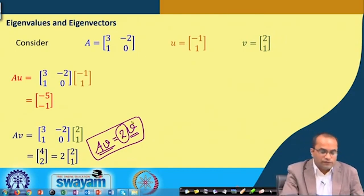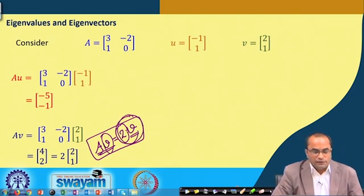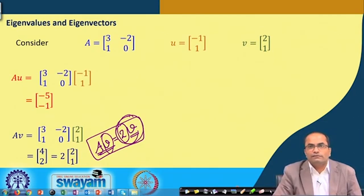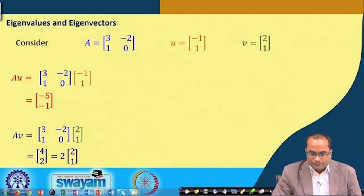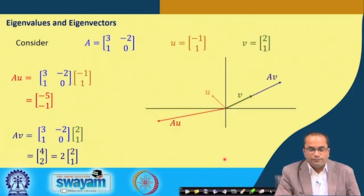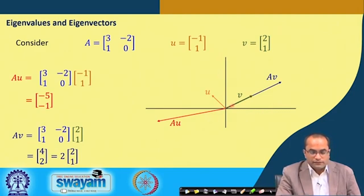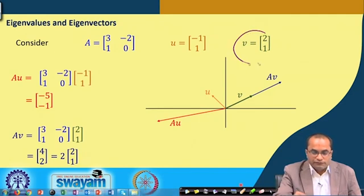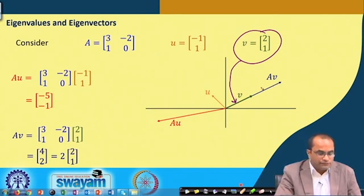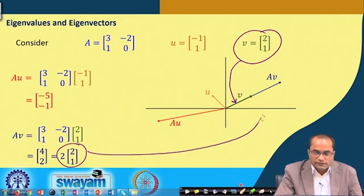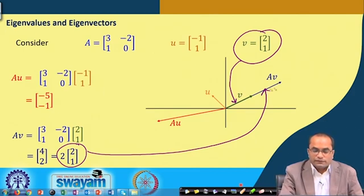The length of vector V has doubled after multiplication. That is exactly the point which takes us to the introduction of eigenvalues and eigenvectors. Geometrically, the vector V and the vector AV have the same direction, and AV is just twice the length of V.